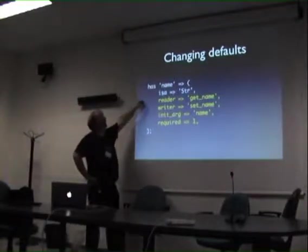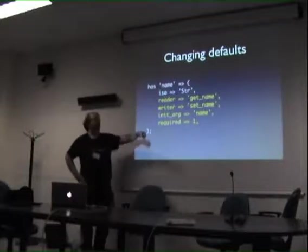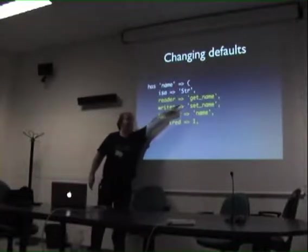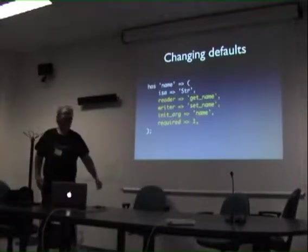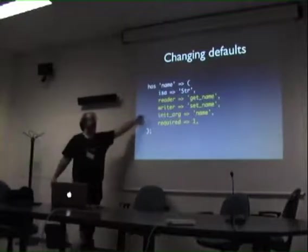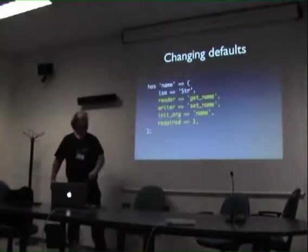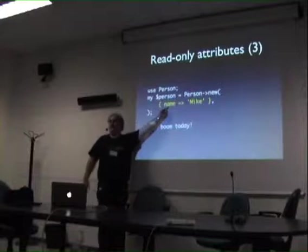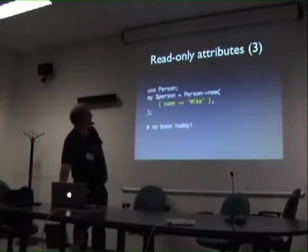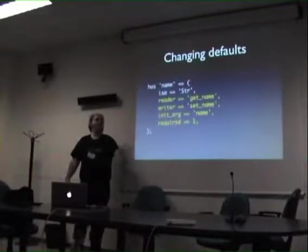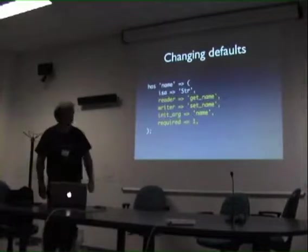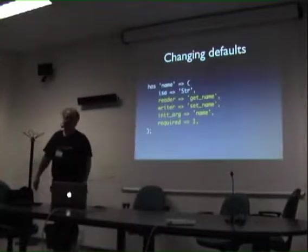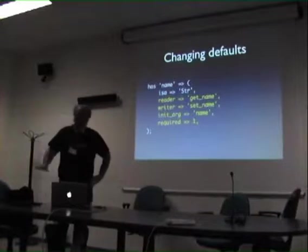`has` is quite powerful - it's got a lot of useful stuff in it. You can change, for example, the name of the reader accessor subroutine: instead of calling it `name`, I can say `reader => 'get_name'`, and then `$person->get_name` will return me the name. Equally, the writer I can call `set_`. `init_arg` is the value of the hash key - it defaults to the attribute name, but you can change it. And `required` says if you don't pass it in on construction, it's an error. Since people always should have names, that means if I don't pass in a name when creating the object, it will blow up.